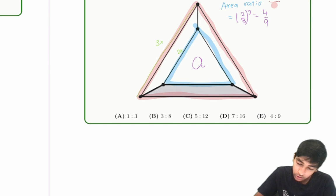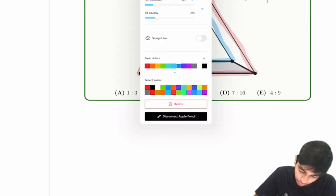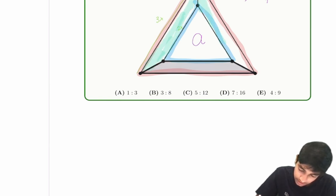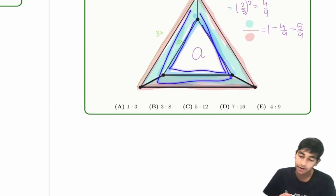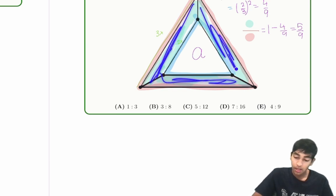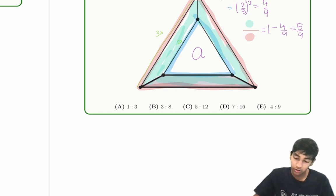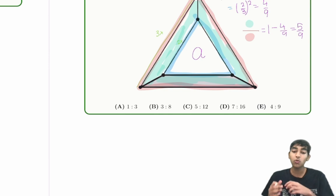Because the blue triangle makes up four-ninths the area of the red triangle, the area in between — the green area — will be five-ninths. The ratio of the green area to the entire red triangle is one minus four-ninths, which is five-ninths. Because combined, the green region and the blue region make up the entire triangle. So if the ratio of blue to the whole is four-ninths, then the green region is five-ninths the area of the entire triangle.